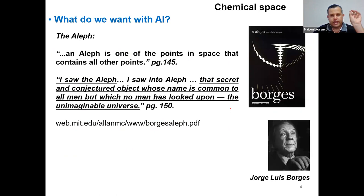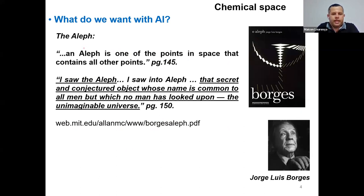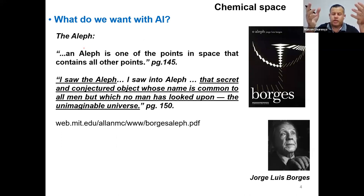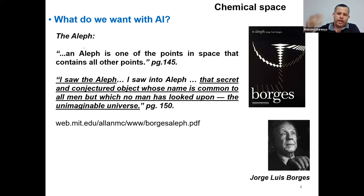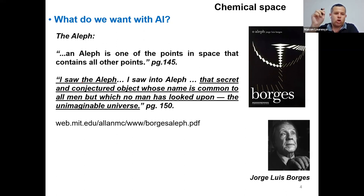What do we want with artificial intelligence? I like this analogy from a short story by Argentine writer Jorge Luis Borges. The story is called 'The Aleph', and the Aleph is defined as one of the points in space that contains all other points. I believe that is what we try to do with science, mathematical modeling, statistics, and artificial intelligence — we wish to find models that can tackle all of these points in space. As Borges wrote: 'I saw the Aleph, that secret and conjectured object whose name is common to all men, but which no man has looked upon — the unimaginable universe.' Maybe that is what we wish with AI.